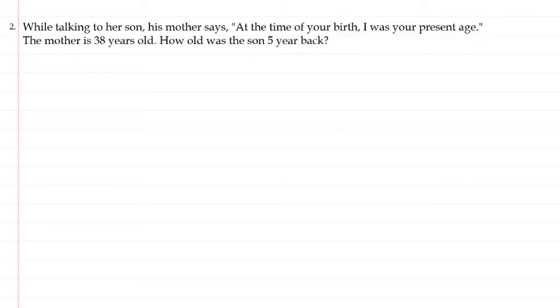Let's set up the problem. If the present age of the son is x, then the mother's age will be 38 minus x. Now let's find the age of the son. We have 38 minus x equals x.